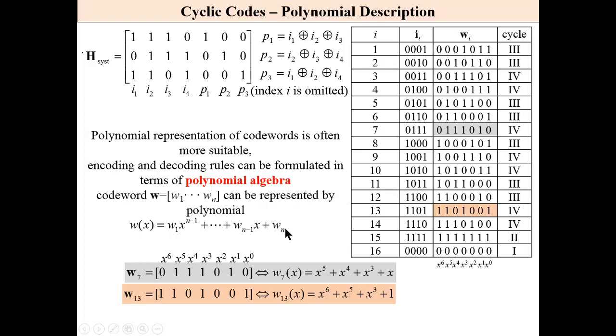W sub n, W sub one, X to the power n minus one. For example, this codeword, it is a binary description, can be expressed as the polynomial.